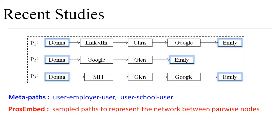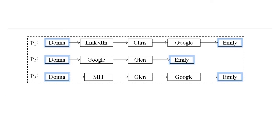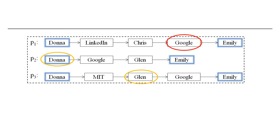For example, for node Google in path P1, it only sees its direct neighbors, while in the other two paths P2 and P3, Donna and Glenn are also neighbors of Google. P1 is unaware of Donna also working for Google, whereas P2 is unaware of Emily working for Google either.